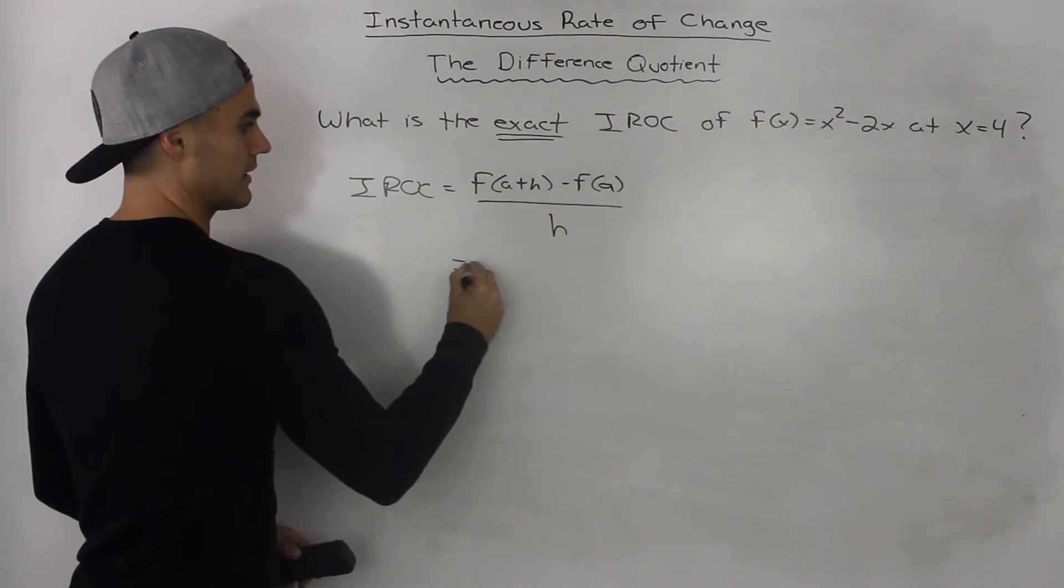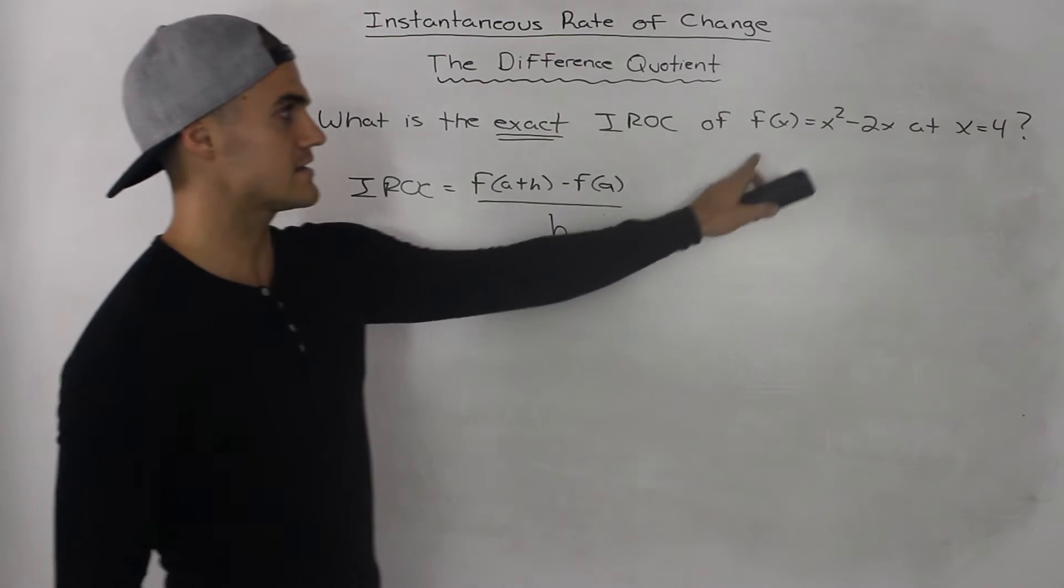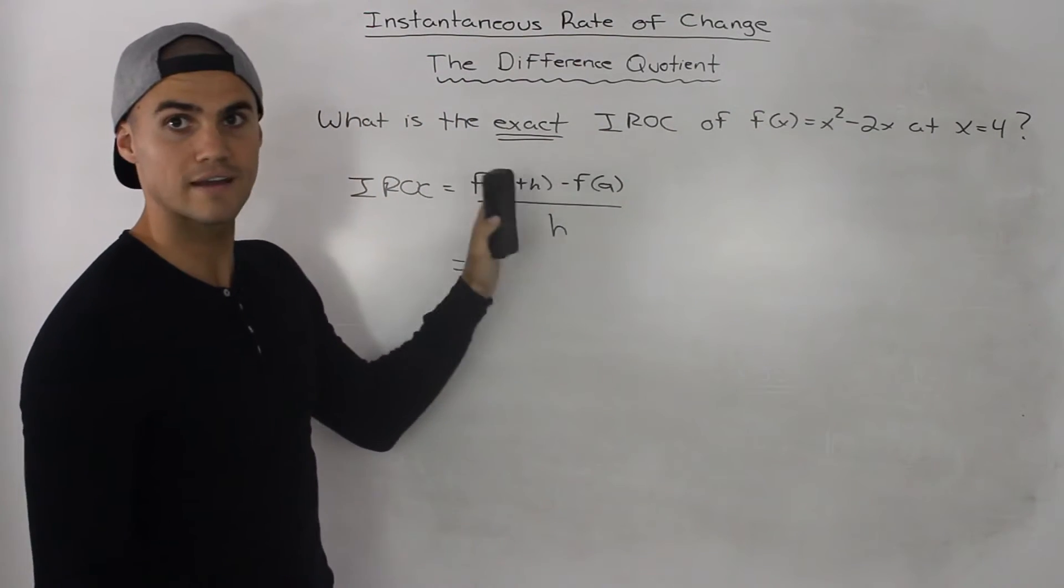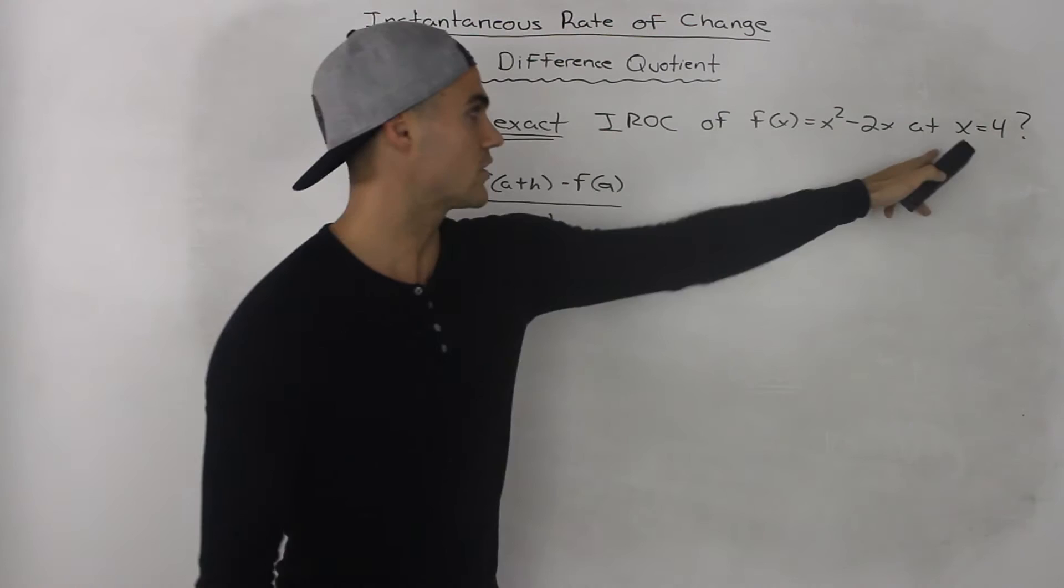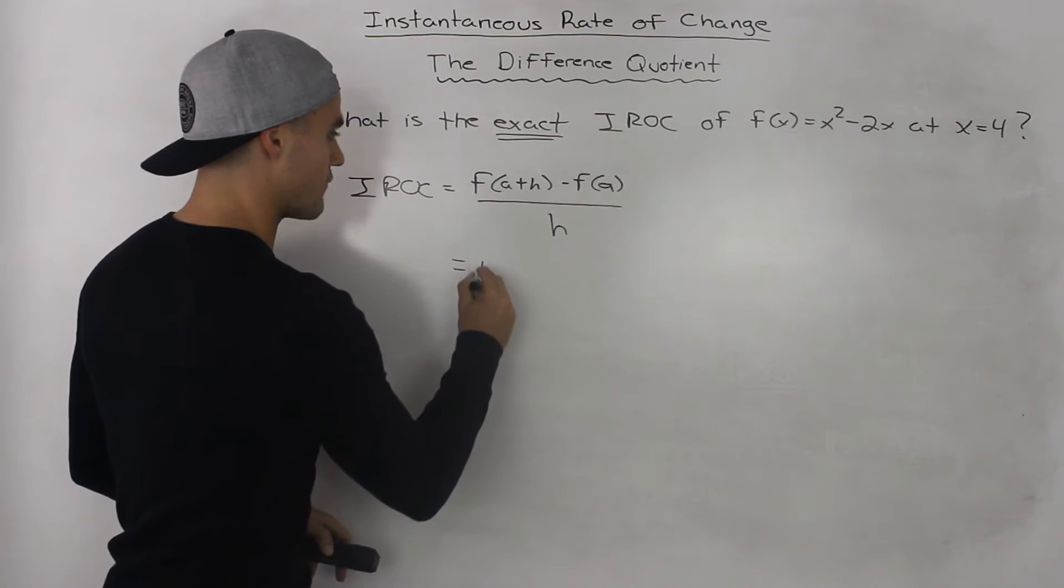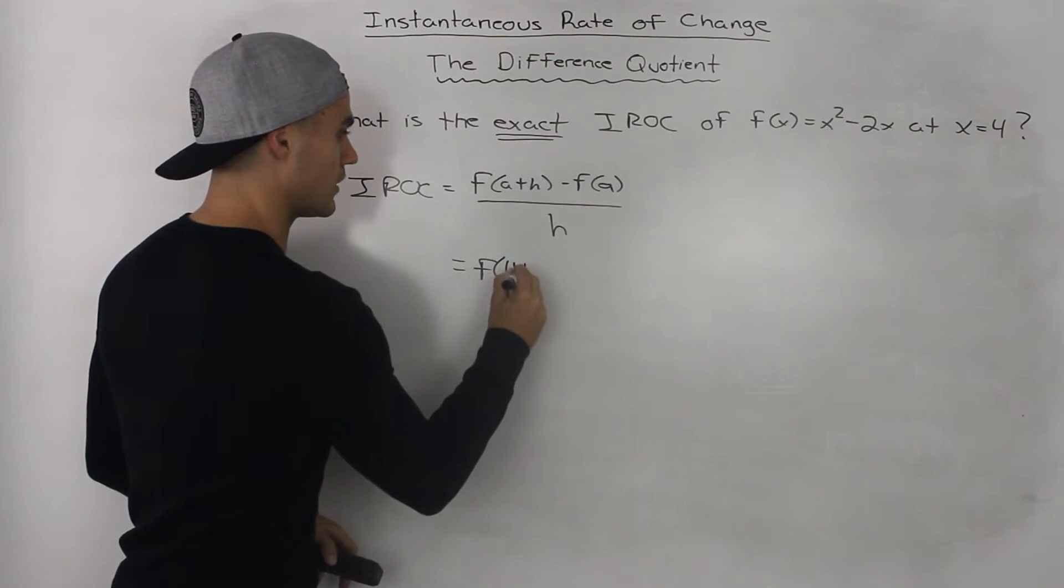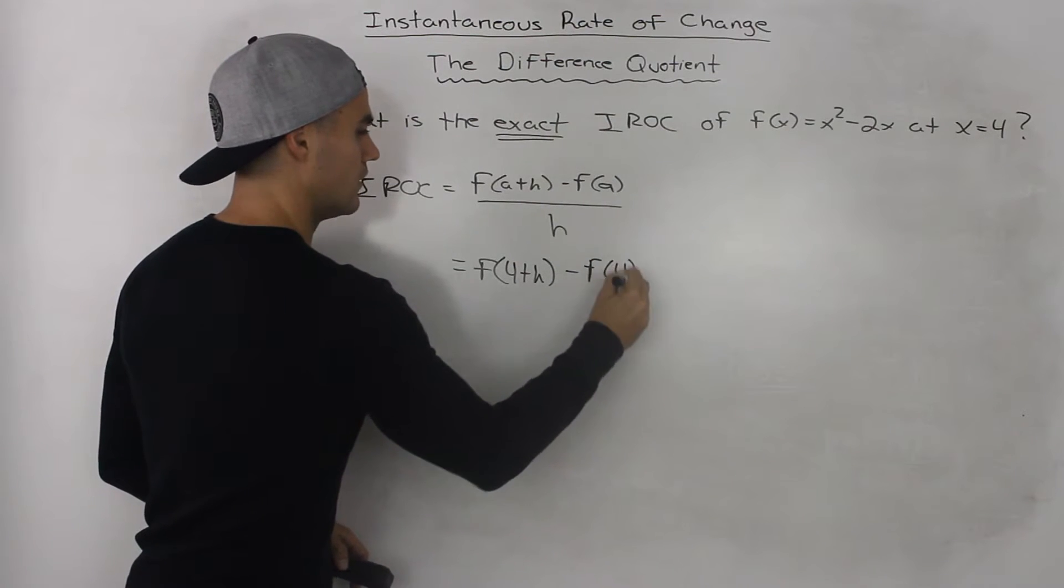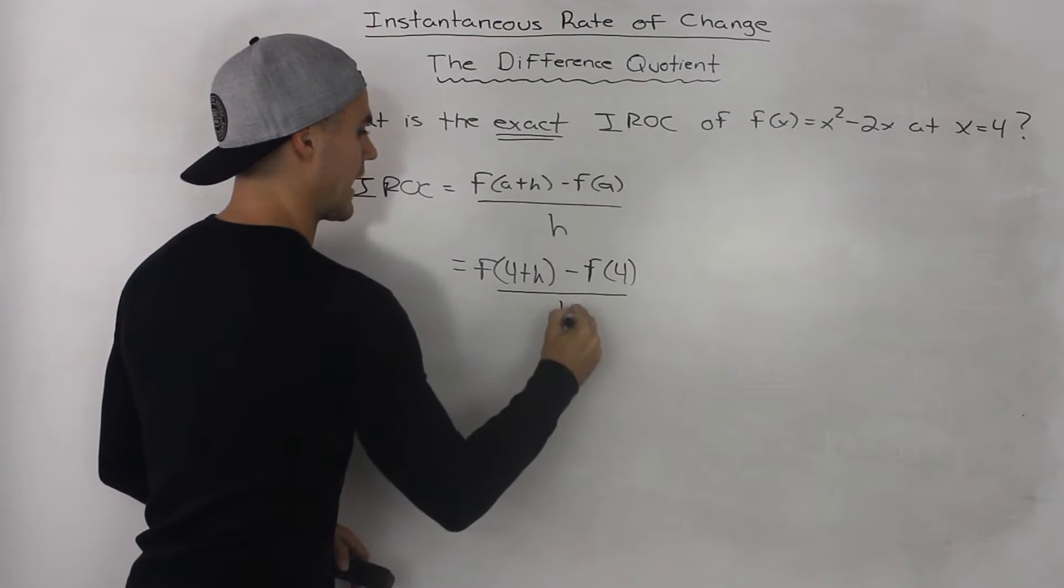And now applying it to our specific case, our a value or the point at which we're finding the instantaneous rate of change is 4. So we would have f of 4 plus h minus f of 4 all over h.